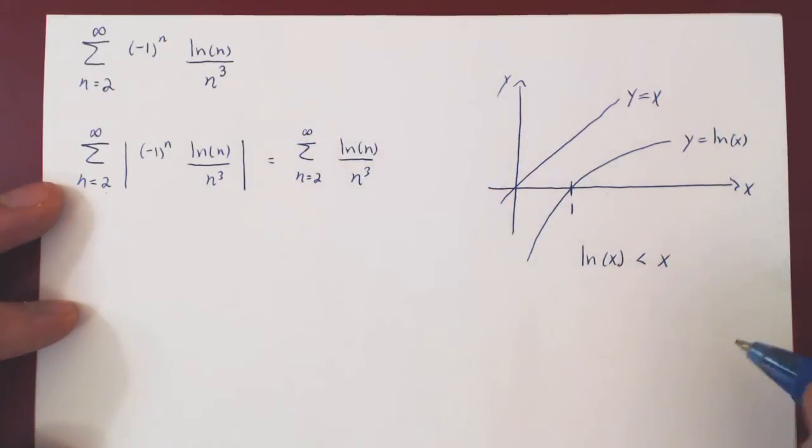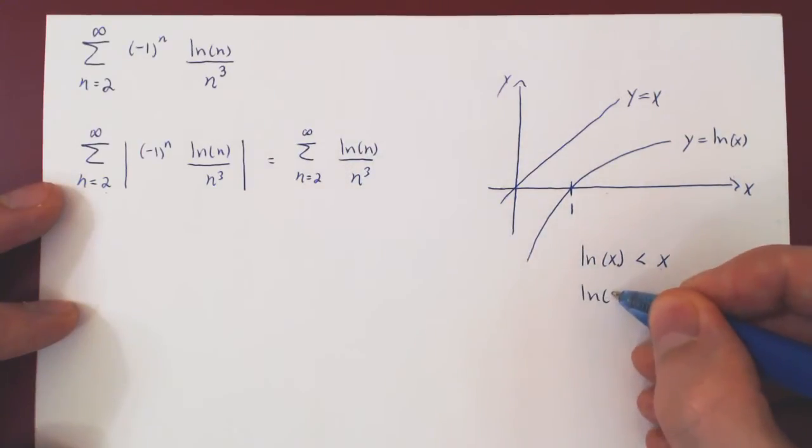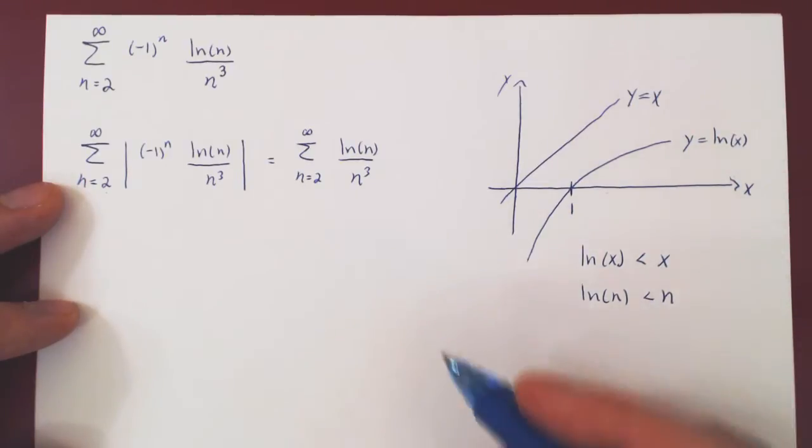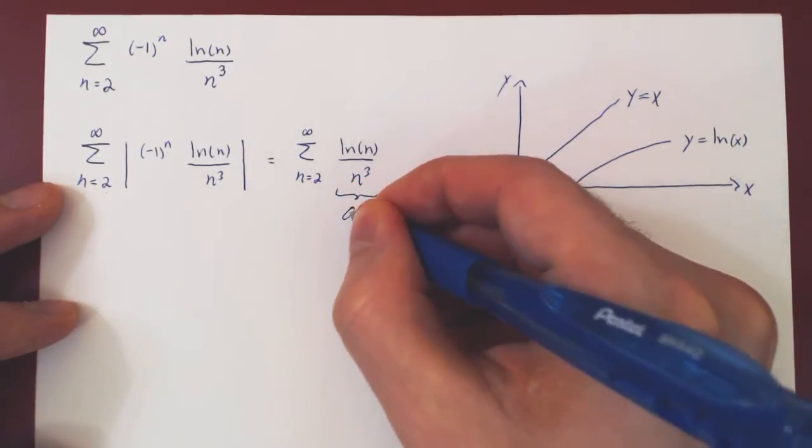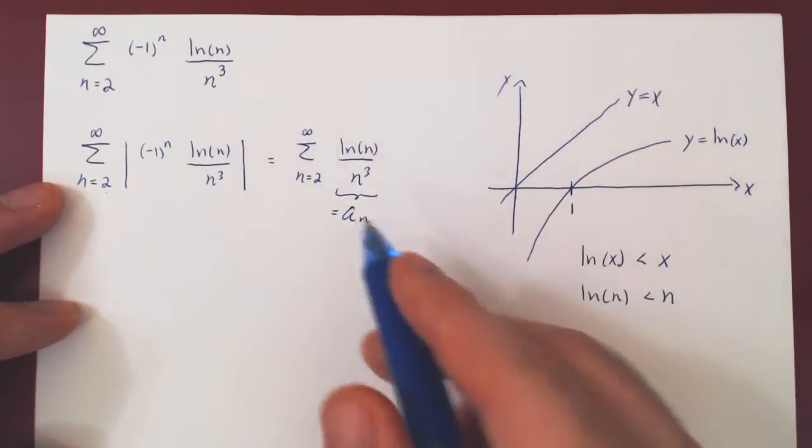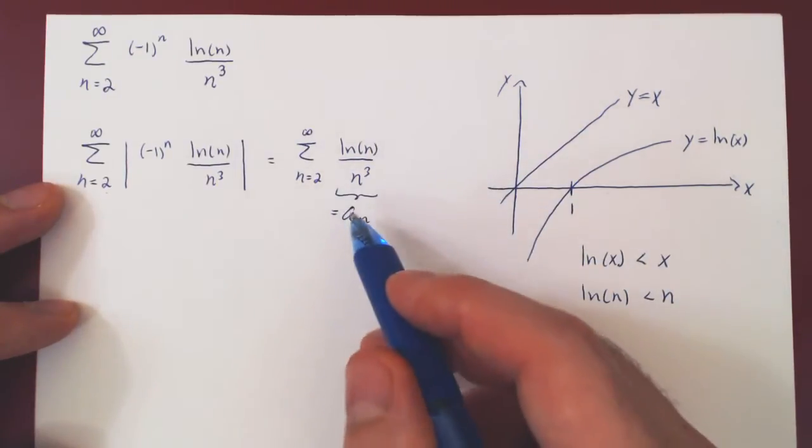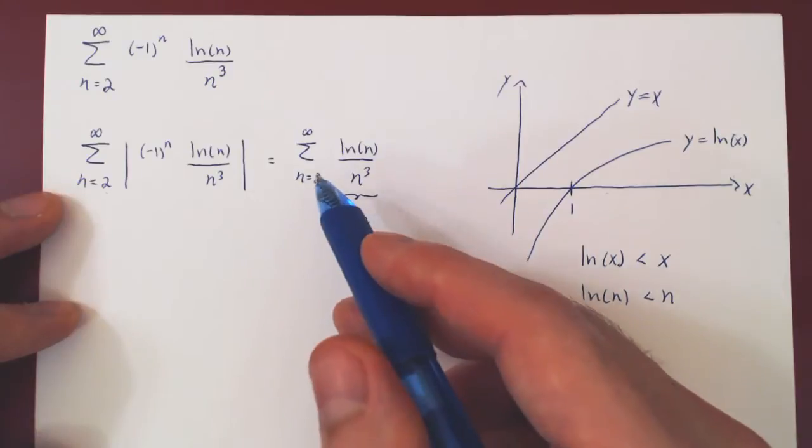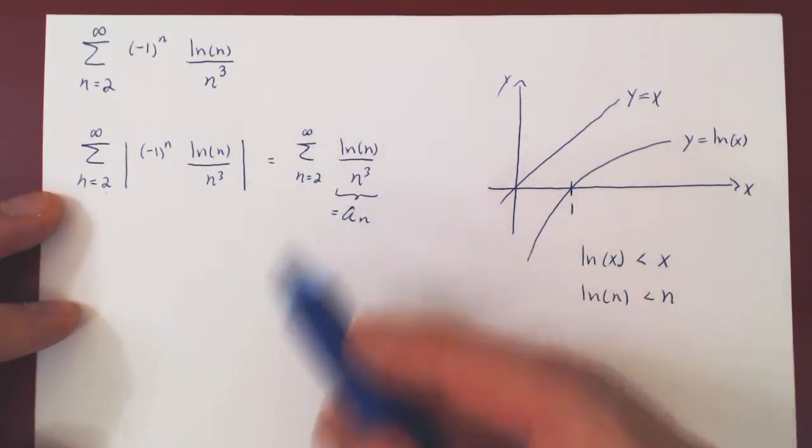Therefore, ln of n is clearly smaller than n. And with this now we're good to go in applying the direct comparison test. So we're summing ln of n over n cubed, I call this a n. As n goes from 2 to infinity, the terms are positive.